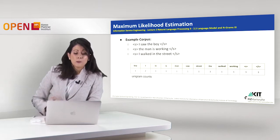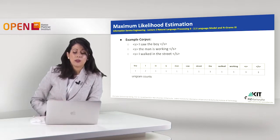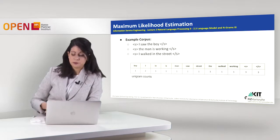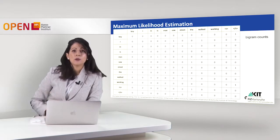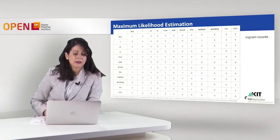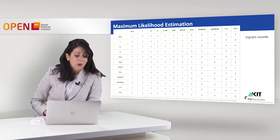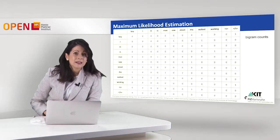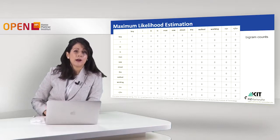First, what we should do is compute the unigrams in the corpus. This is the table with the counts of the unigrams, meaning how many times each word appears in our corpus. Then we also compute the bigram counts. Here we have a two-dimensional table for the bigrams showing all the word combinations. We can see that the words 'boy' and 'boy' never come one after the other in our corpus, while the bigram 'the boy' exists once, as well as the bigram 'walked in,' which also appears once in our corpus.